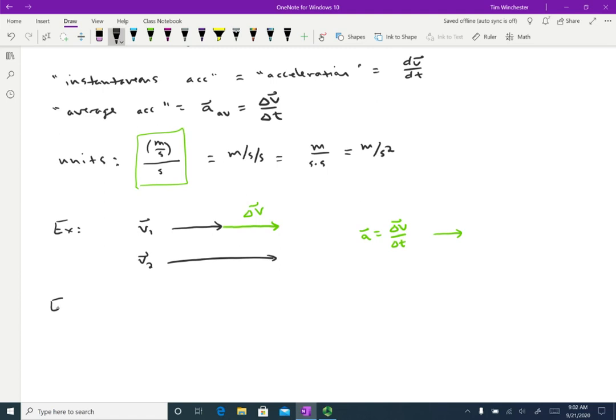So for another example, let's say that we have a velocity one that looks like this. So fairly large velocity to the right, and then a velocity a little bit later, still to the right, but smaller.